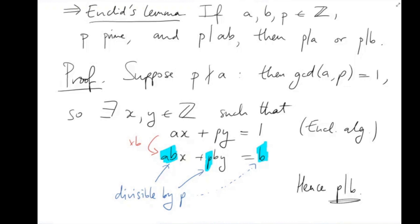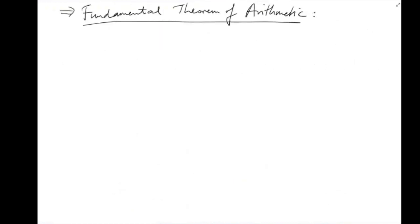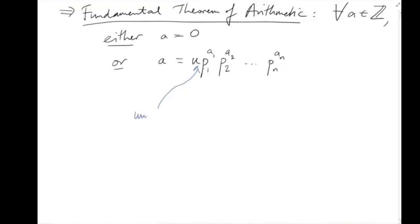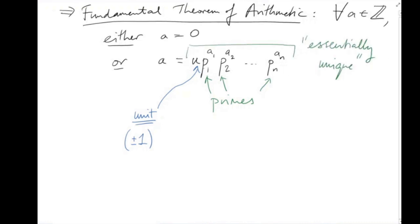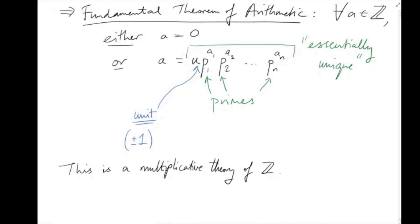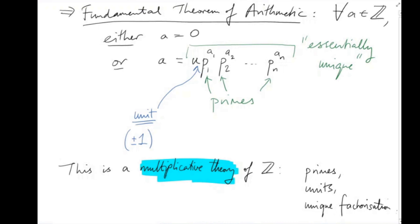From Euclid's lemma we get the fundamental theorem of arithmetic. For all integers A, either A is 0, or A can be written as a unit — that's plus or minus 1 — times a bunch of primes. The important fact is that this decomposition is more or less unique. This gives us a multiplicative theory of the integers: the basic building blocks are primes and units, and we know there's only one way to build each non-zero integer out of them. We got all of this from the Euclidean algorithm on Z.